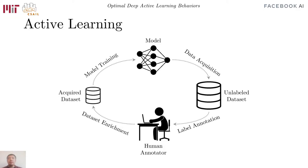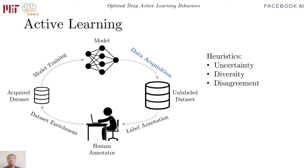In active learning, the data acquisition process is guided by the model training, often leading to higher sample efficiency than normal supervised learning. The central component of an active learning algorithm is the data acquisition function. Traditionally, they are based on heuristics such as prediction uncertainty, input diversity, or ensemble disagreement.